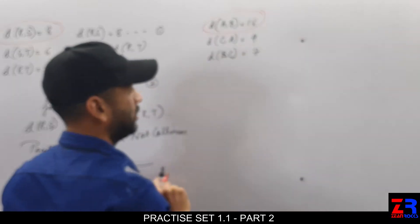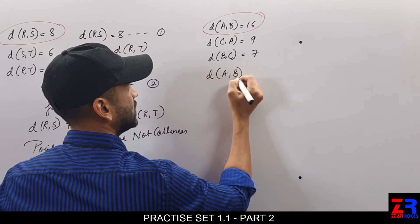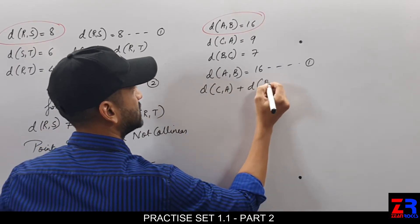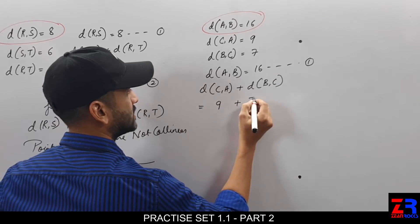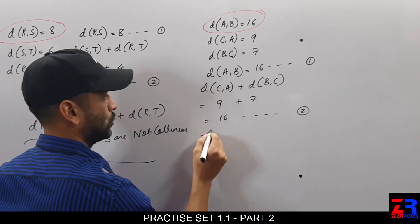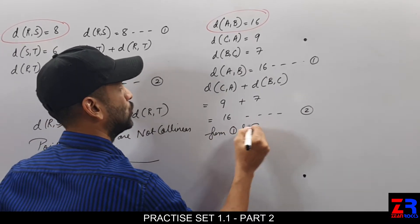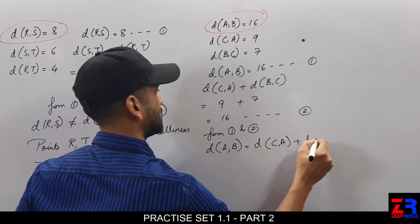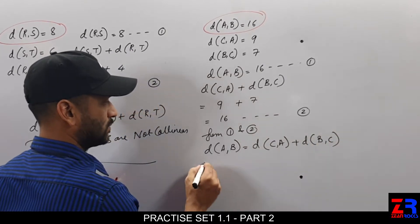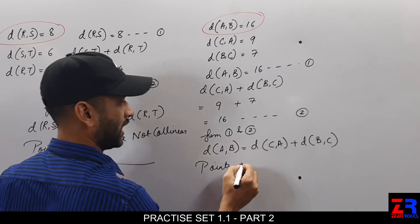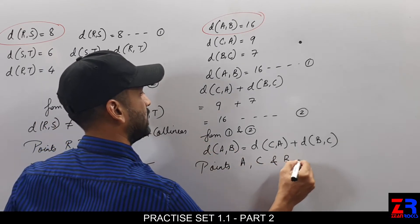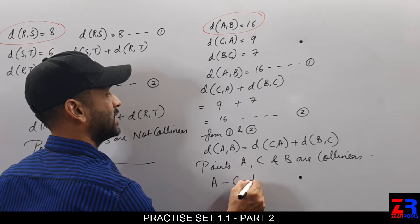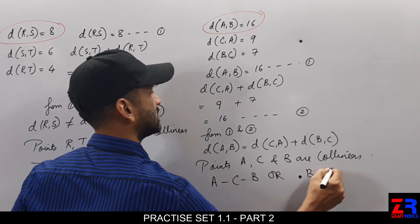The values are 16, 9 and 7. The biggest side is AB. Distance AB is equal to 16 (equation 1). Distance CA plus distance BC equals 9 plus 7, which is 16 (equation 2). From 1 and 2, distance AB is equal to distance CA plus distance BC. They are equal, so point C lies in between A and B. Therefore points A, C and B are collinear. The betweenness is A–C–B, or B–C–A.